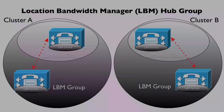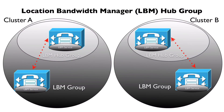We can also use locations-based CAC between clusters. Each cluster can have an LBM hub group — for example, cluster A and cluster B each contain Communications Manager servers running the LBM service. One server in each cluster is designated as belonging to an LBM hub group, which is used to communicate with hub groups in other clusters over a SIP trunk. Members of LBM hub groups form a full mesh of connectivity, so cluster A can learn about the topology in cluster B, enabling optimal call routing decisions even between clusters.